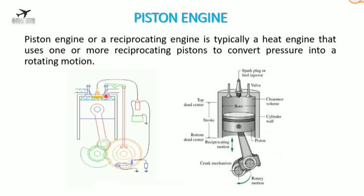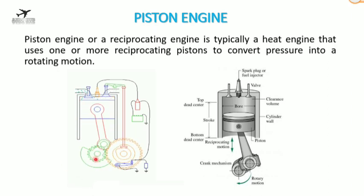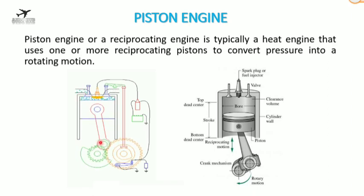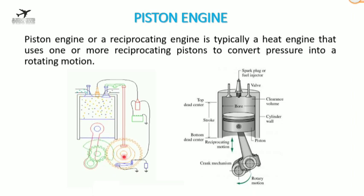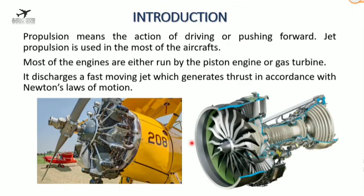The fourth and final stroke is the exhaust stroke, where the burned gases exit from the exhaust valve. The crankshaft transforms the reciprocating motion of the piston into rotary motion. In turn, the propeller is rotated and the aircraft moves forward.